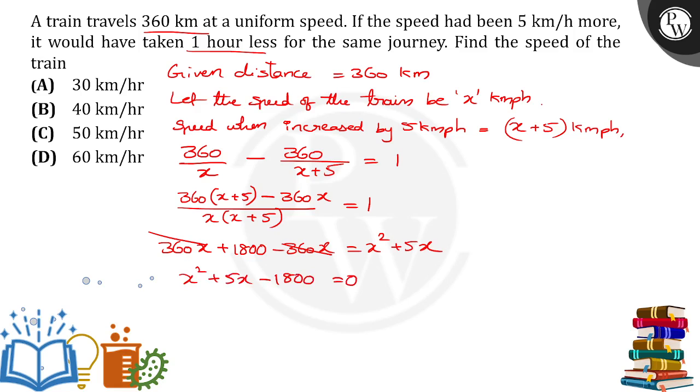Now, what I have to do? I have to do factorization for this. How can I do the factorization? I can do it as 45x minus 40x minus 1800 is equal to 0, because the product of 45 into 40 is equal to 1800.